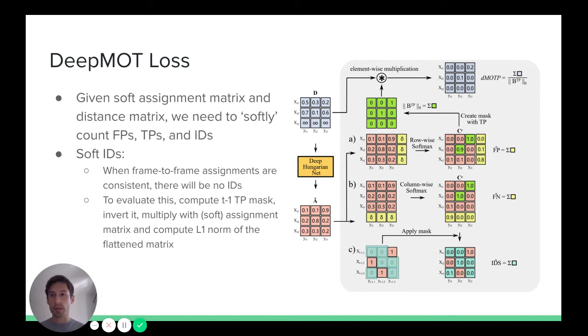We do pretty much exactly the same to count number of false negatives. In this case, we will append a row filled with this base value and we will perform column-wise softmax. By summing over the appended row, we will get a soft approximation of the number of false negatives.